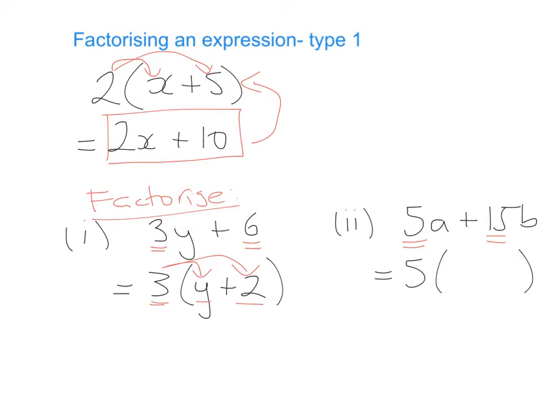So we bring 5 to the outside of our bracket and say: 5 multiplied by what gives me 5a? That's a. And 5 multiplied by what gives me 15b? Start with the 15 — what do you multiply 5 by to get +15? That's +3, and then we pop the b on so it gives us 15b. So the answer is 5(a + 3b).